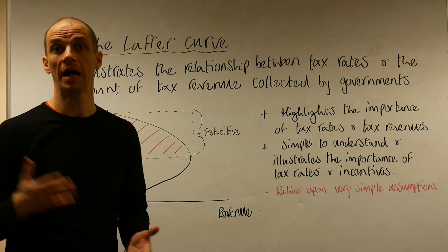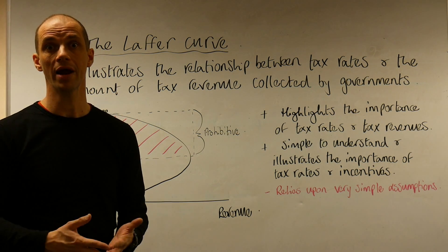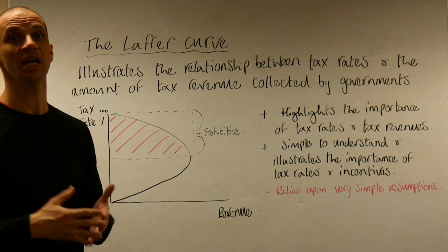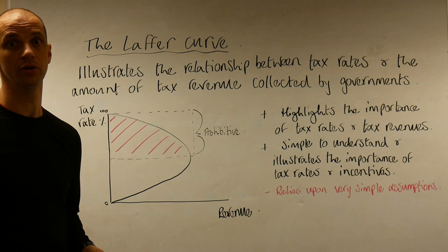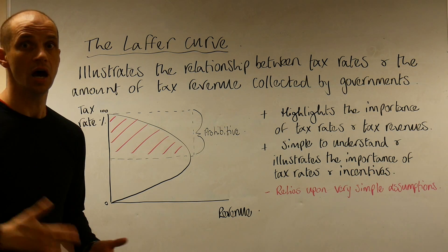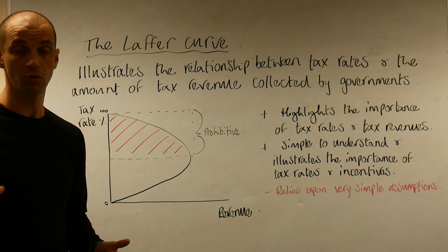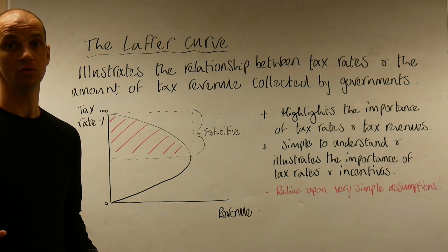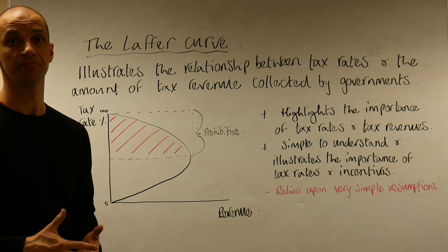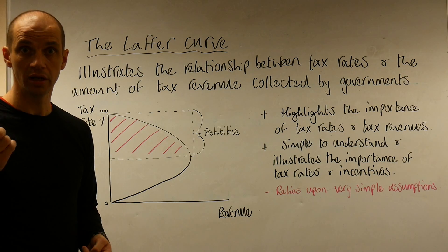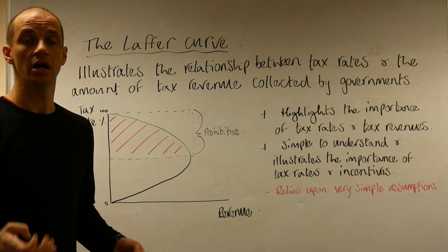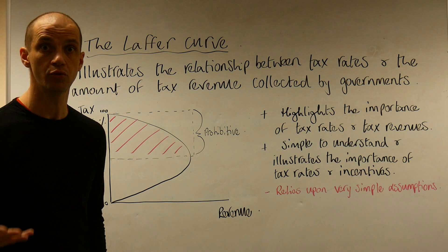A good example of this was when Gordon Brown introduced the 50% tax rate on the highest income earners beyond £150,000. That subsequently led to a fall in tax revenue generated by that particular group.